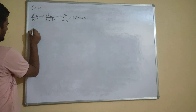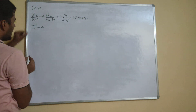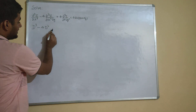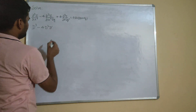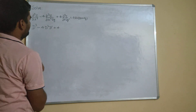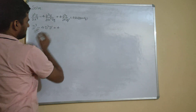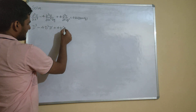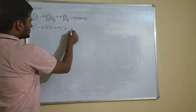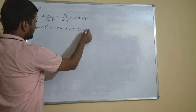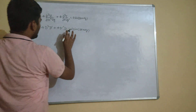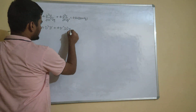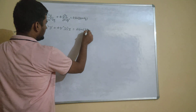So this will be D³ minus 4. From here, del²Z/delX² can be written as D², and 1 del/delY can be written as D dash. Plus 4 times del³Z/delX delY² — now del²Z/delY² can be written as D dash², and 1 del/delX as D. This equals 2 sin(3X + 2Y), operating on Z.